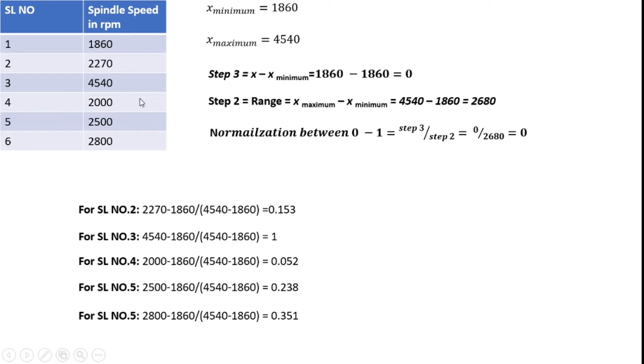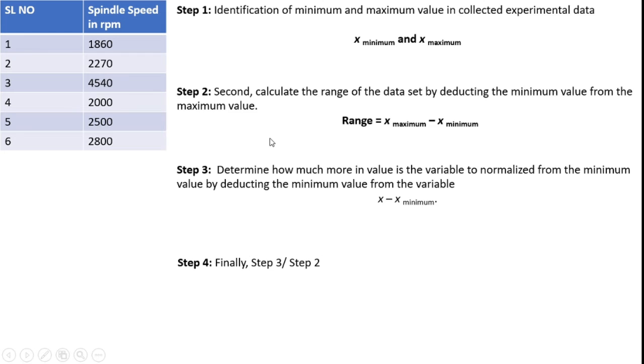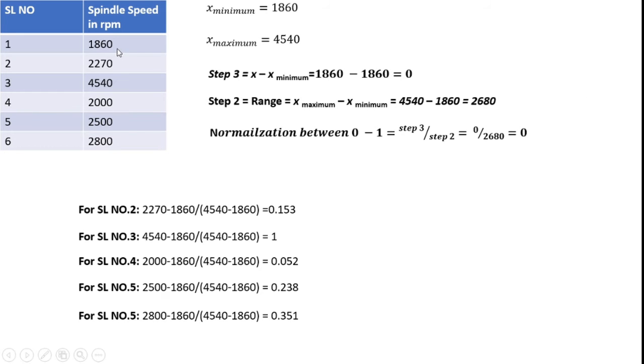Then, the practical example. From this available table, minimum x is 1860 and the maximum x is 4540. From this, I can perform step 3, x minus x_minimum. For example, if I consider the first serial number, the x value is 1860 RPM. So I substitute 1860. The available minimum value from this table is 1860. Again, 1860 available. So that step 3 is equal to 0.